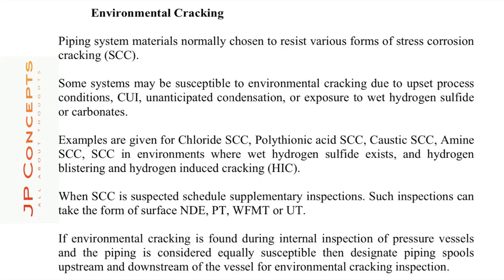Stress corrosion cracking is considered environmental cracking. Some systems may be susceptible to environmental cracking due to upset process conditions, corrosion under insulation, anticipated condensation, etc. Examples include chloride stress corrosion cracking, polythionic acid stress corrosion cracking, caustic stress corrosion cracking, and amine stress corrosion cracking. When stress corrosion cracking is suspected, schedule supplementary inspections such as NDT, PT, WFMT, or UT. If ammonium cracking is observed during inspection of a pressure vessel, extra care should be given to the associated piping, which should be considered susceptible to SCC.